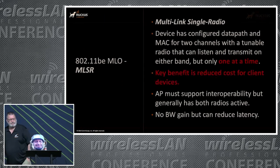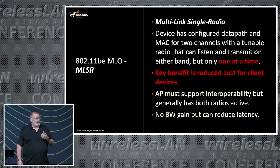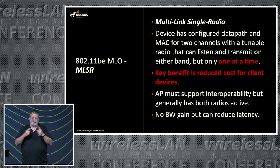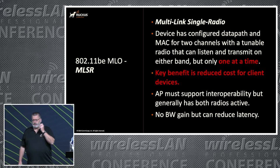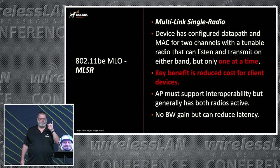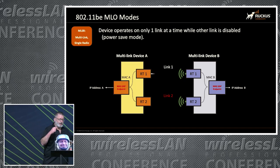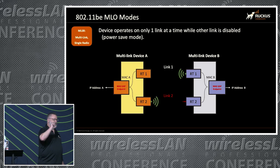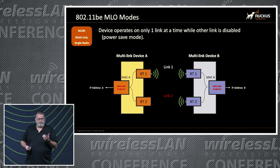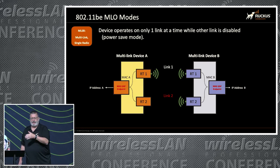The next one is multi-link single radio — just a standard one. This is almost what we have today. The one difference is when the client device associates, it actually associates on both bands so it has a configured data path. When it switches from one radio to the other, it doesn't have to do the four-way handshake because it's already done. It already has this MLD MAC on the device and the AP, so it can simply switch back and forth. However, it's also known as a power save mode because it turns off the other radio. The AP keeps its radio on, but the client turns one radio off and turns the other one on and switches back over, so it doesn't have two radios on at the same time drawing power.